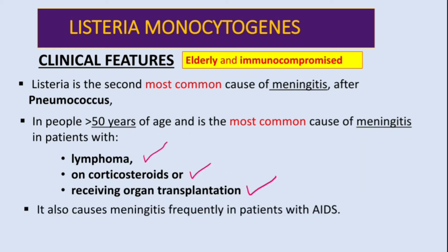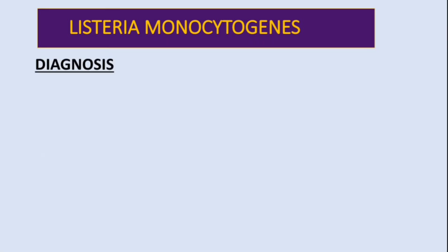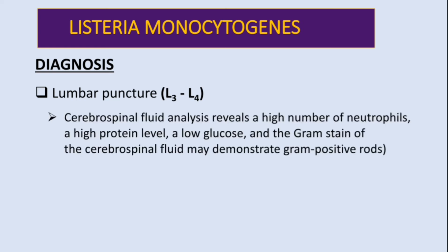It also causes meningitis in people with AIDS. Now for diagnosis: since listeria commonly causes meningitis, we perform a lumbar puncture, taking cerebrospinal fluid at the L3–L4 level from the subarachnoid space. CSF analysis will reveal a high number of neutrophils, a high level of protein, and low glucose.